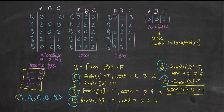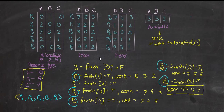To find the need matrix, you subtract the allocation matrix from the maximum matrix — that's how you get the need matrix. Max minus allocation gives you the need matrix. The available matrix is usually given to you. There will be two types of questions: first, the available matrix is given to you, and you can solve it accordingly.